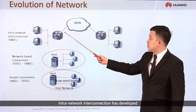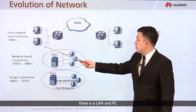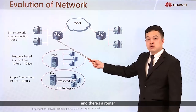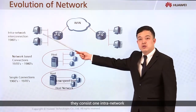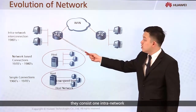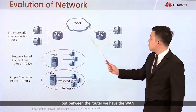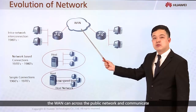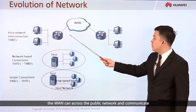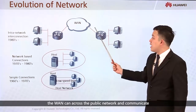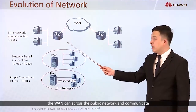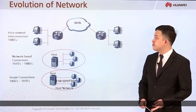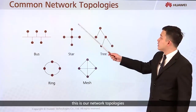Then internetwork interconnection developed. There is a line and PC and there is a router — they form one internetwork. Between routers we can cross a public network and communicate from one router to another router.